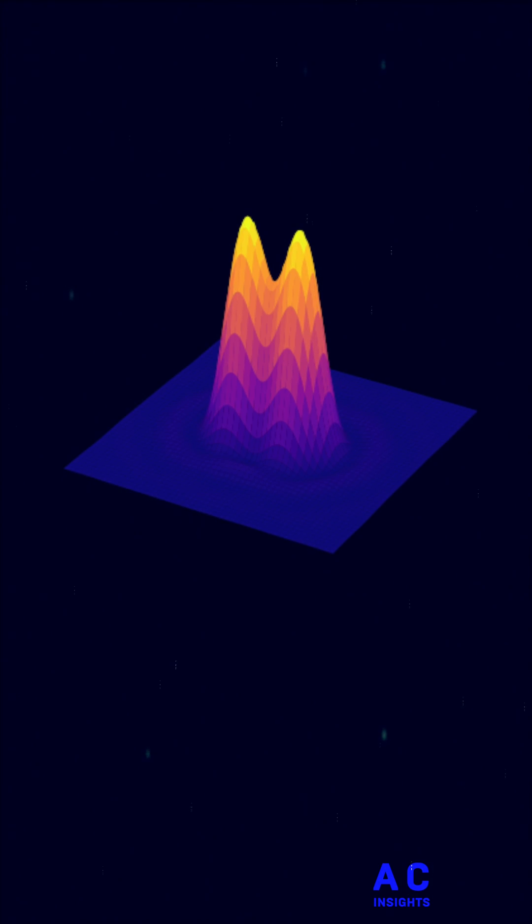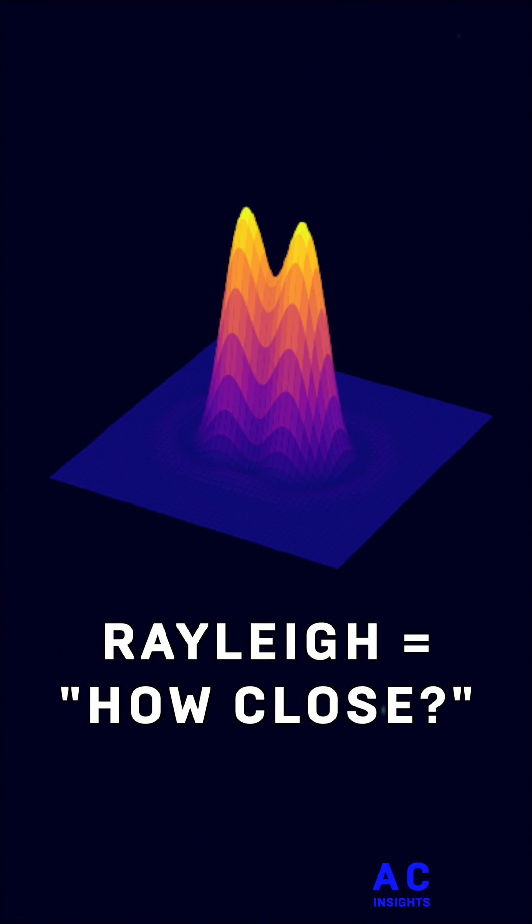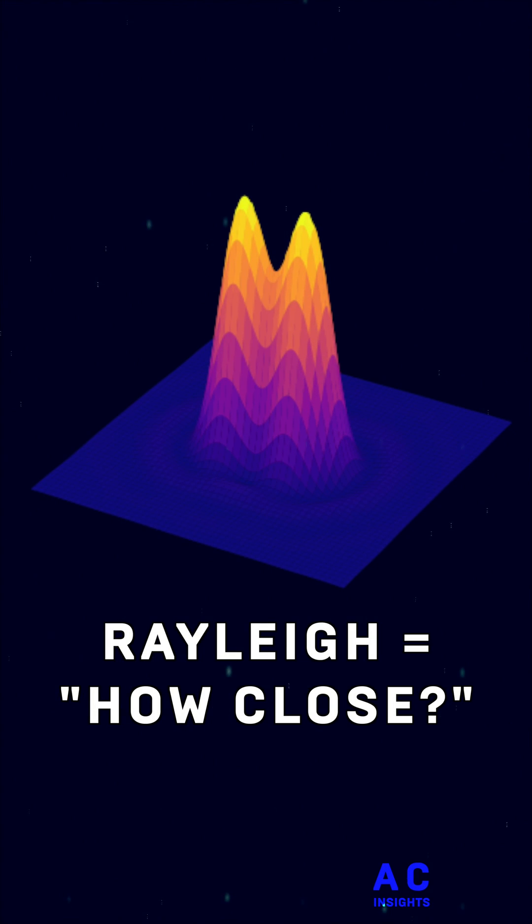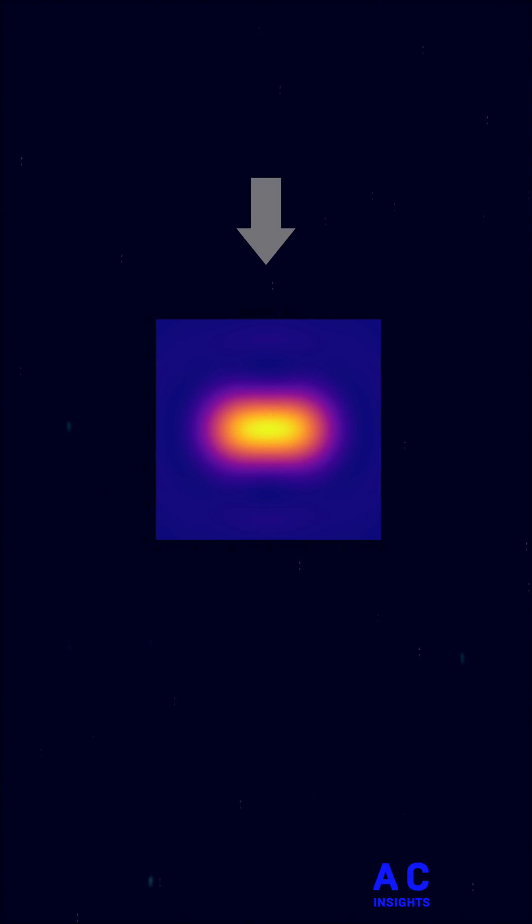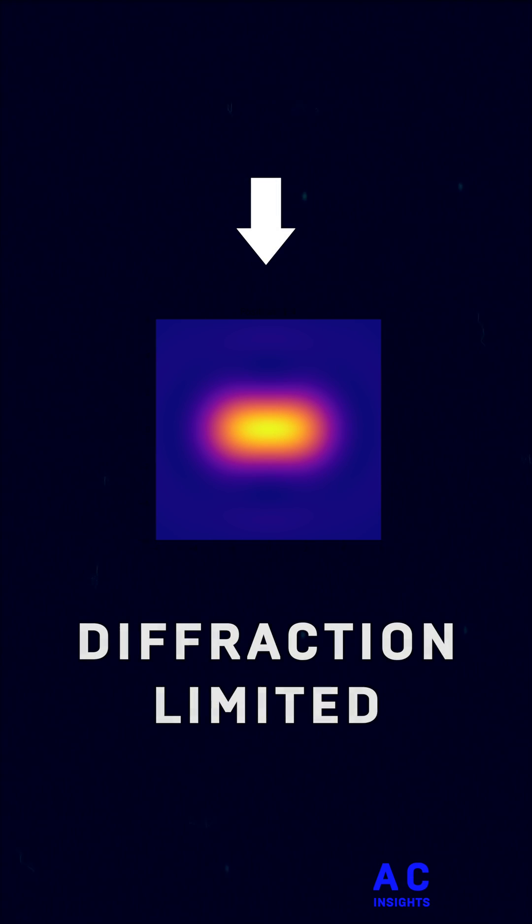Essentially, this Rayleigh criterion just tells us that there's a limit to how close two points of light can be and still be distinguishable as two separate points. An optical instrument that has reached this limit of performance is said to be diffraction limited.